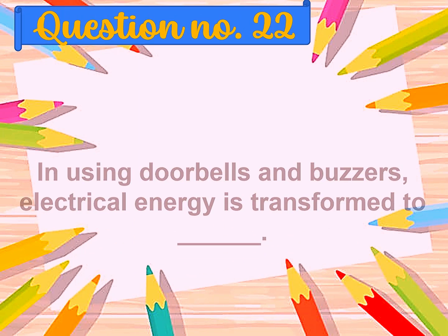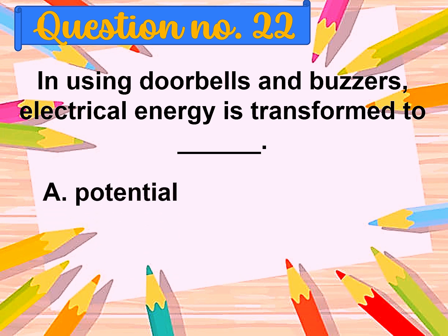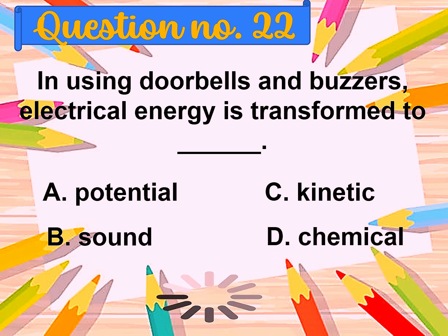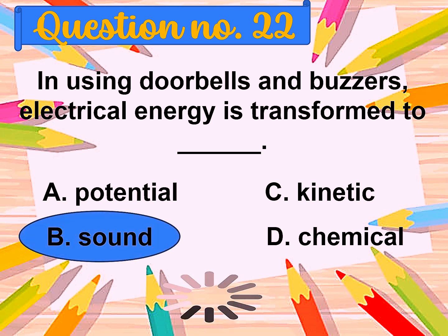Question number twenty-two: In using doorbells and buzzers, electrical energy is transformed to blank. A. Potential, B. Sound, C. Kinetic, D. Chemical. The correct answer is sound.